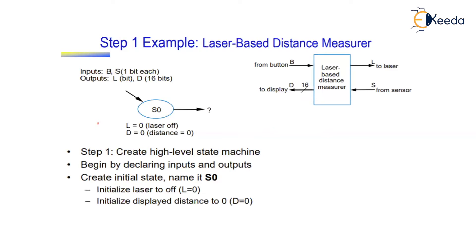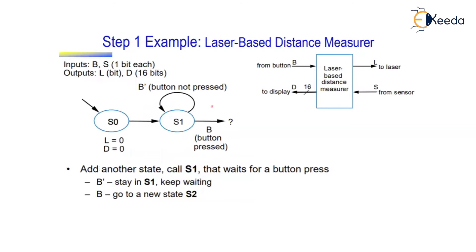We begin creating the high-level state machine by declaring inputs and outputs. The first state is the initial state, S0. In S0, the laser is turned off (l = 0) and the distance register d is initialized to zero. After completing initialization, we move into the next state.